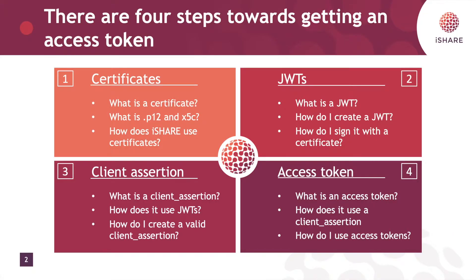There are four steps towards getting an access token. First, you need to understand what a certificate is and how it is used in iShare. Then you need to understand what a JSON web token is, how you can create one, and how you can use a certificate to sign it. Then you need to know what a client assertion is and how it's used in iShare to prove your identity. And last, you need to understand how to get an access token using the client assertion. If you already understand any of these topics you can skip ahead. For those familiar with OAuth 2.0, this process will be very familiar because iShare's authentication is based on that protocol.